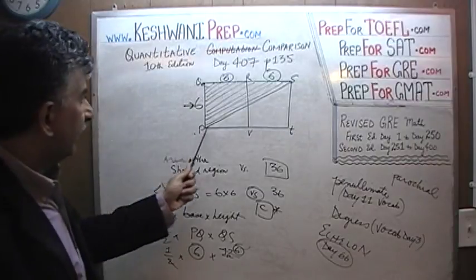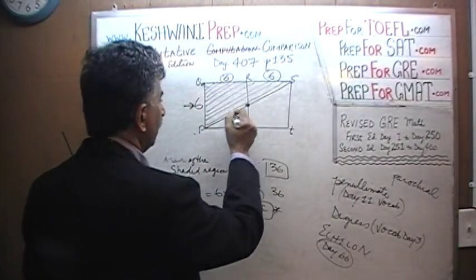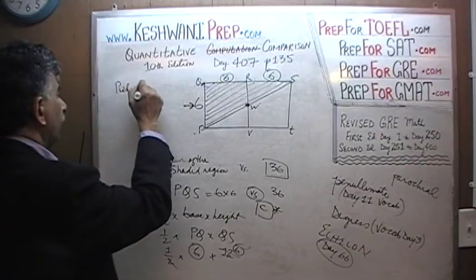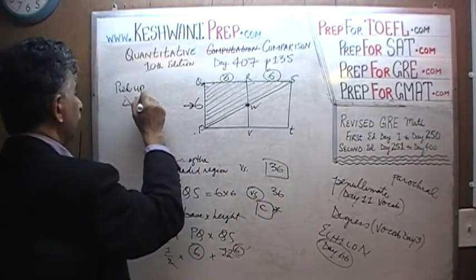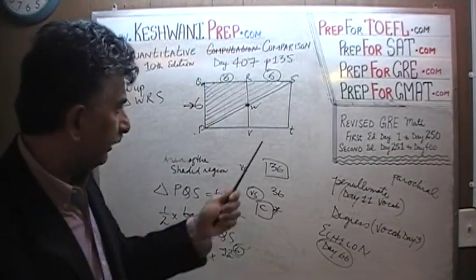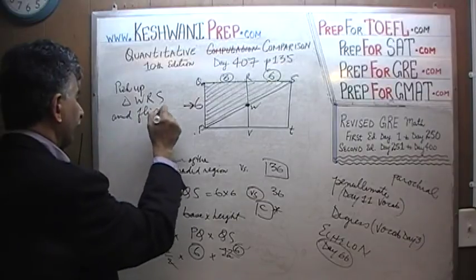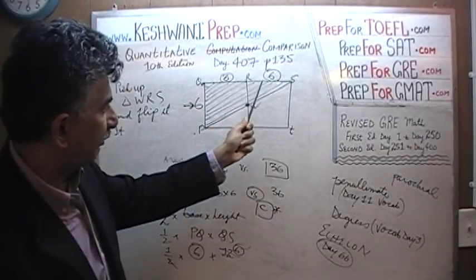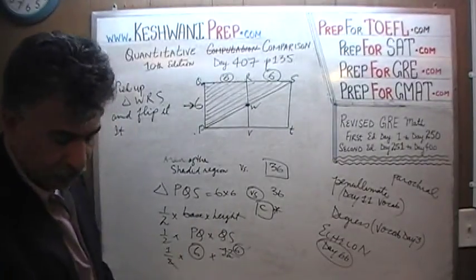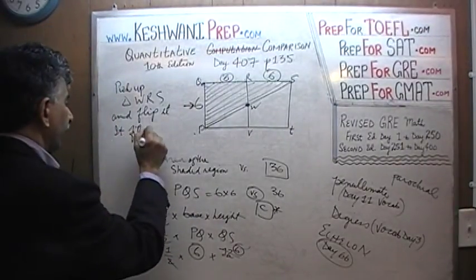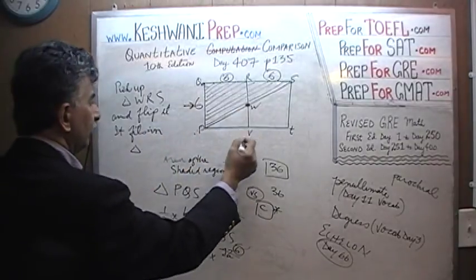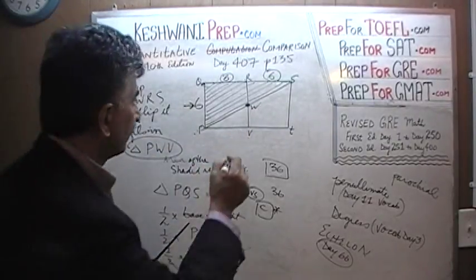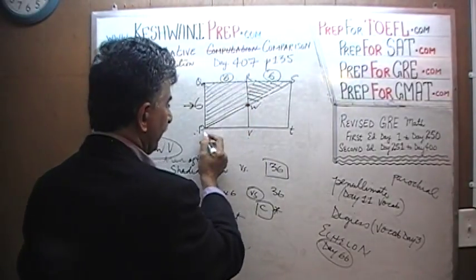You see where the line PS and the line RV intersect? Let's give this point a name. Let's call it W. Pick up the triangle WRS. Pick it up in your mind, pick it up and flip it. You should be able to see when you pick up triangle WRS, when you flip it, you should be able to see that it fits in triangle PWV. Can you see it? Can you picture it? Pick up this triangle right here, pick it up and flip it and put it here. It should fit in PWV.